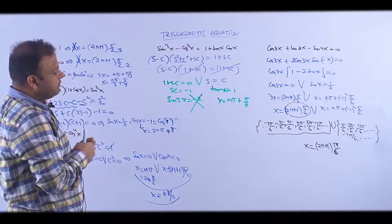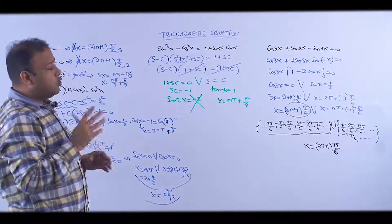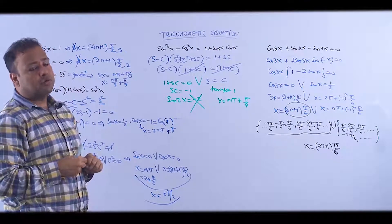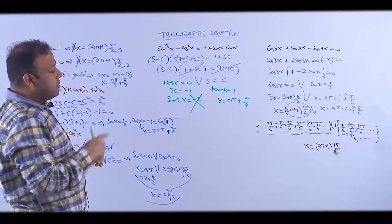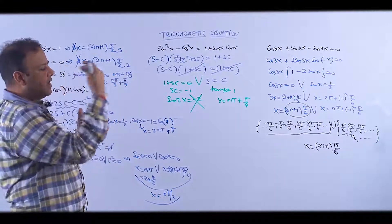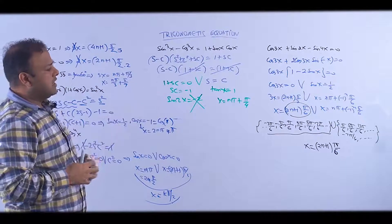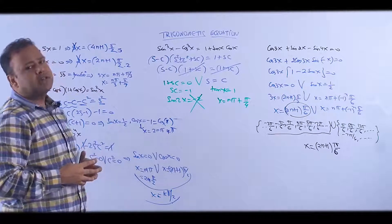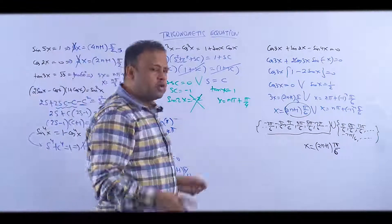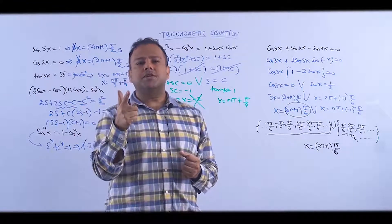So the final answer is x = (2n+1)π/6. No need to write both separately. Since both had π/6, I tried to merge and it worked. All elements of the second set are contained in the first set, which is (2n+1)π/6 — odd multiples of π/6. We'll be solving more equations, so stay tuned.